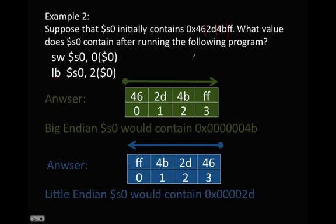Now for Little Endian, we do the same thing, but we're moving from right to left. So we have the double F here, the 4B, and so forth. And then we do the same thing with our 2 offset, 0, 1, 2. So this is our value. And we have S0 would contain this hexadecimal value. We sign extend it.